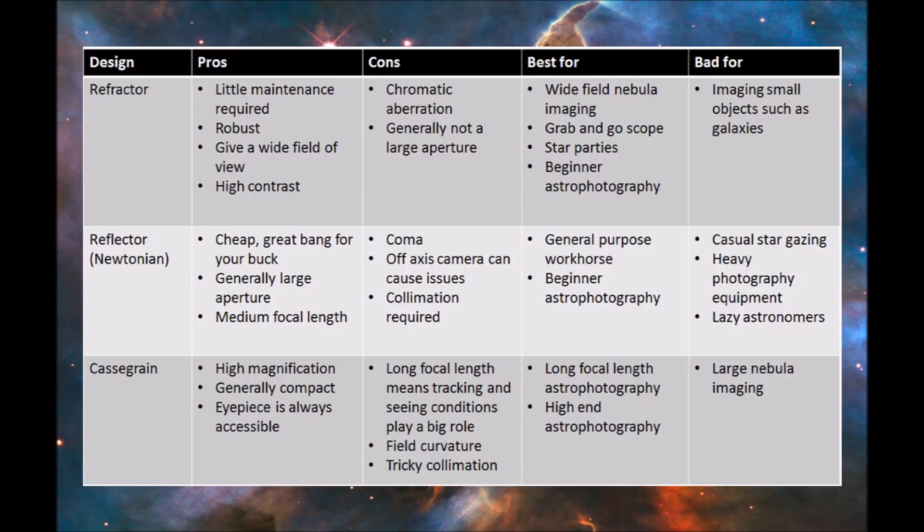However, they do suffer from something called coma. This is just due to the optical design. Generally around the sides of the image that you take, or the field of view that you have, the stars will tend to look a bit like comets. This can be corrected, but it's another piece of equipment that you might have to buy if you're interested in getting the best views.